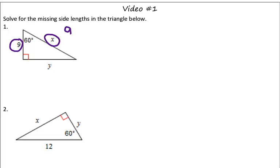To solve for the hypotenuse, we take our shorter leg and just multiply it by 2. So, 9 times 2 is 18, therefore, x is 18.